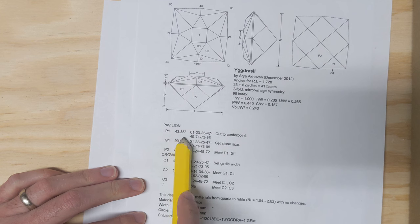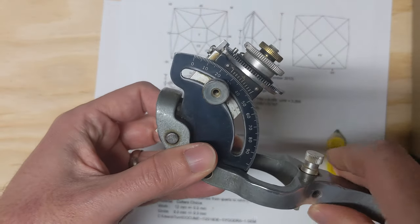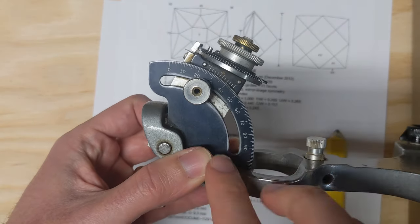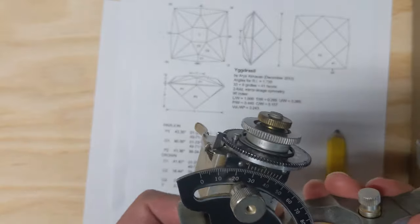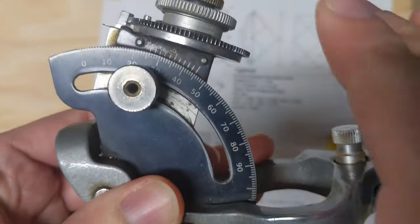For pavilion 1, the angle you want to set your protractor to is 43.35, or as best as you can. Some have digital guides, but mine is just a regular protractor basically. So I would change mine to 43 there.